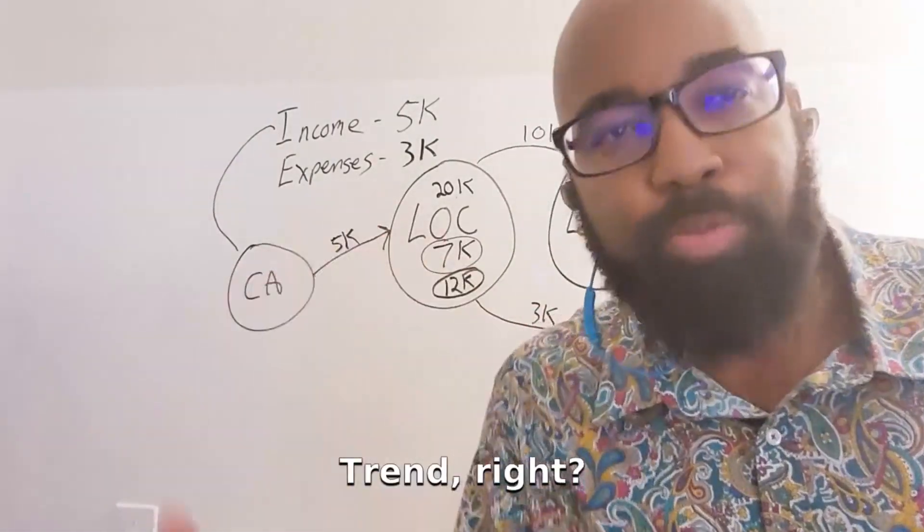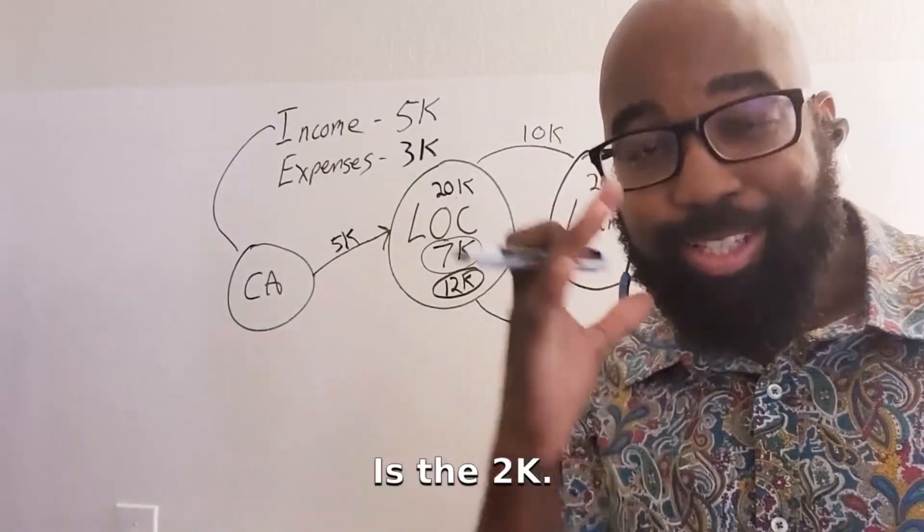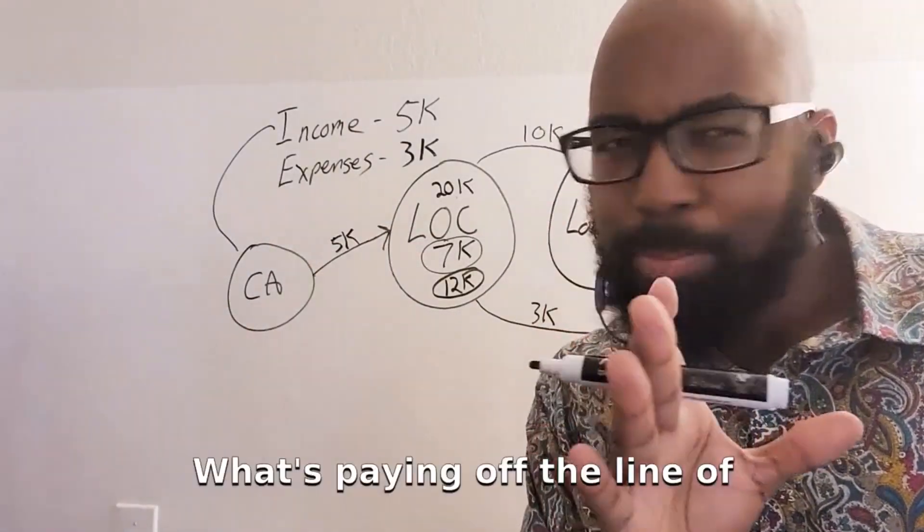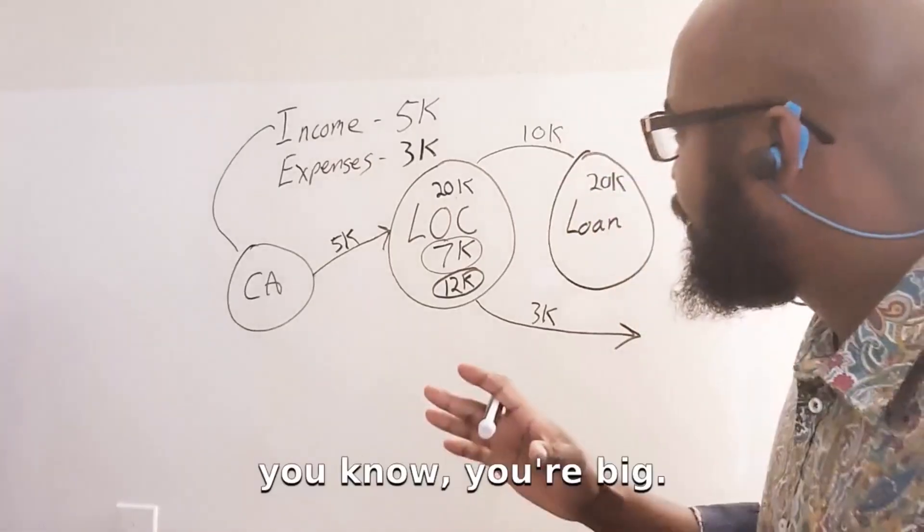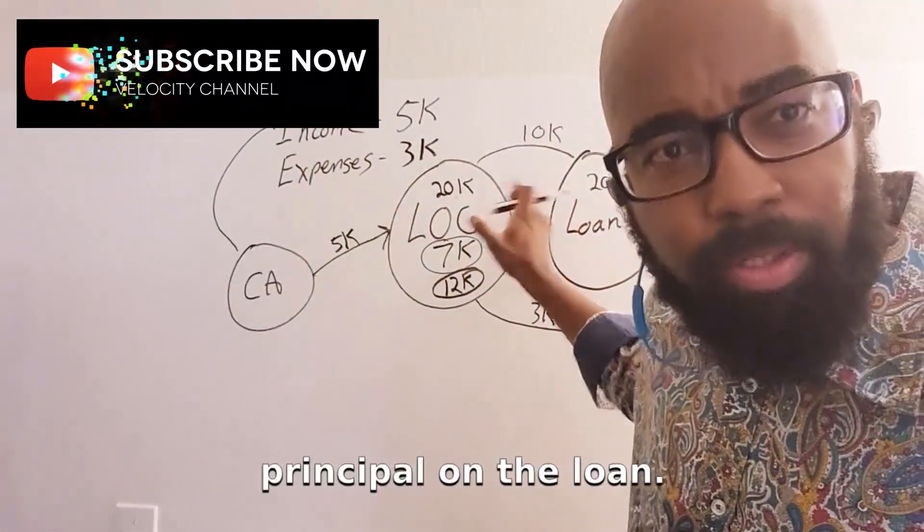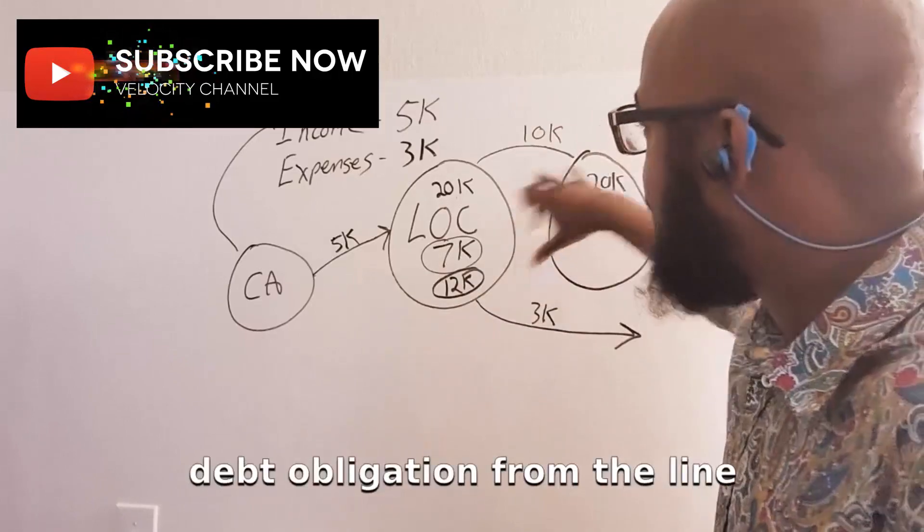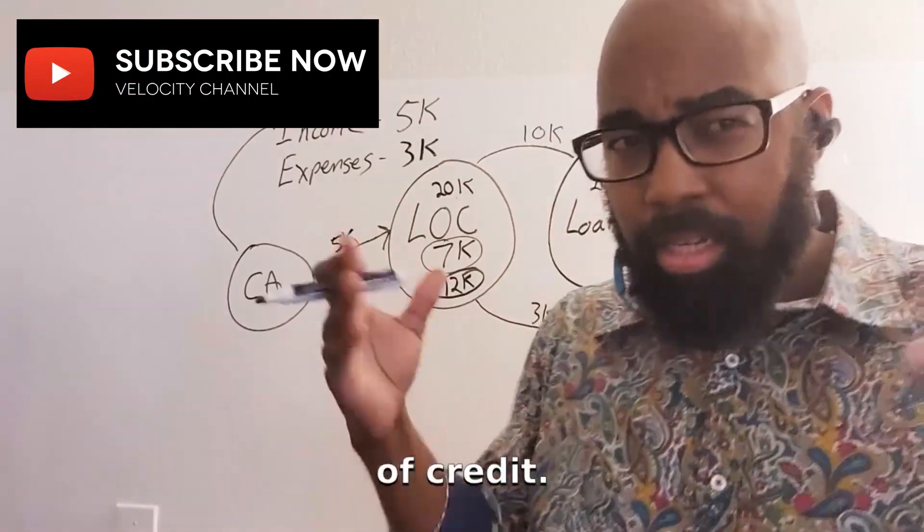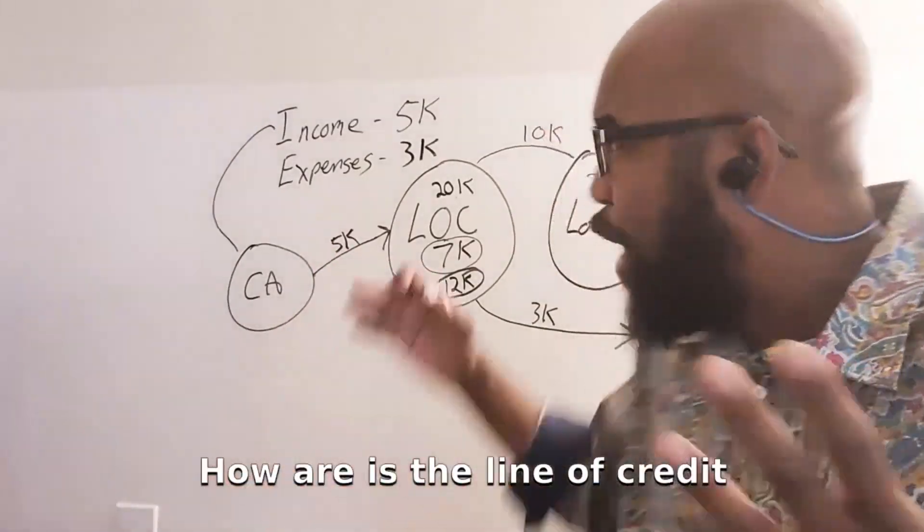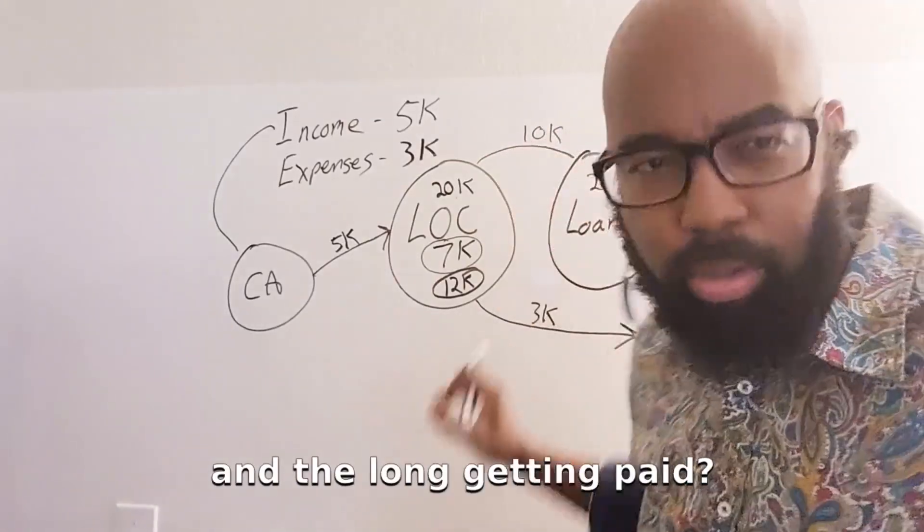But that's okay, because the upward trend is the 2K. What's paying off the line of credit? You know, you just paid 10K to the principal on the loan. You're still paying the debt obligation from the line of credit. What's happening? How is the line of credit and the loan getting paid?